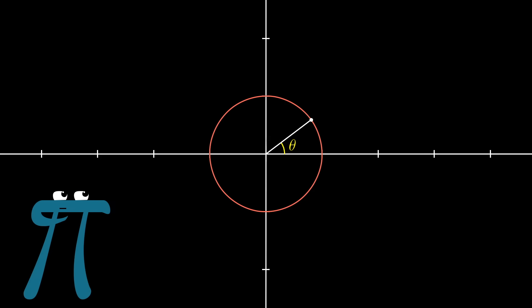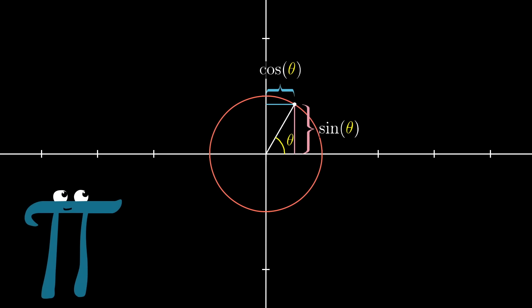Most trigonometry students learn that the distance between this point here on the circle and the x-axis is the sine of the angle, and the distance between that point and the y-axis is the cosine of the angle. These links give a really wonderful understanding for what cosine and sine are all about.